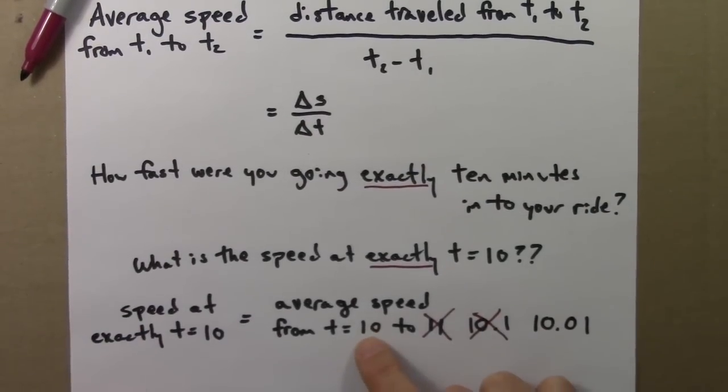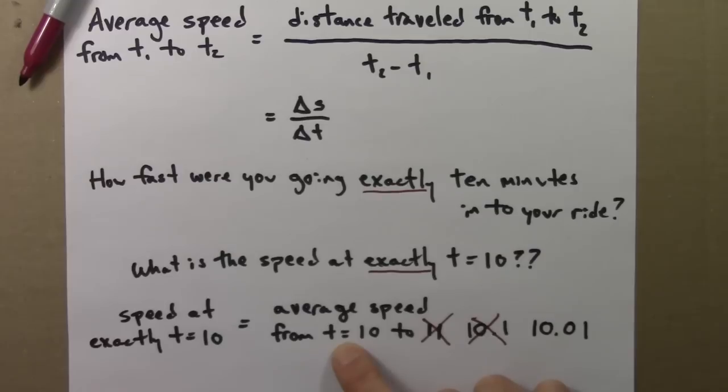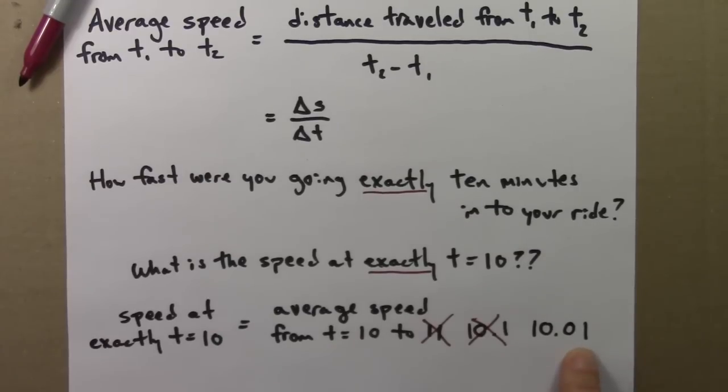Maybe I'll just calculate the average speed from t equals 10 to 10.01. And again, you might object, well, yes, this is a really small time interval, but still, your speed could be changing in this time interval. So it's not a good approximation or representation of the speed at this particular instant.